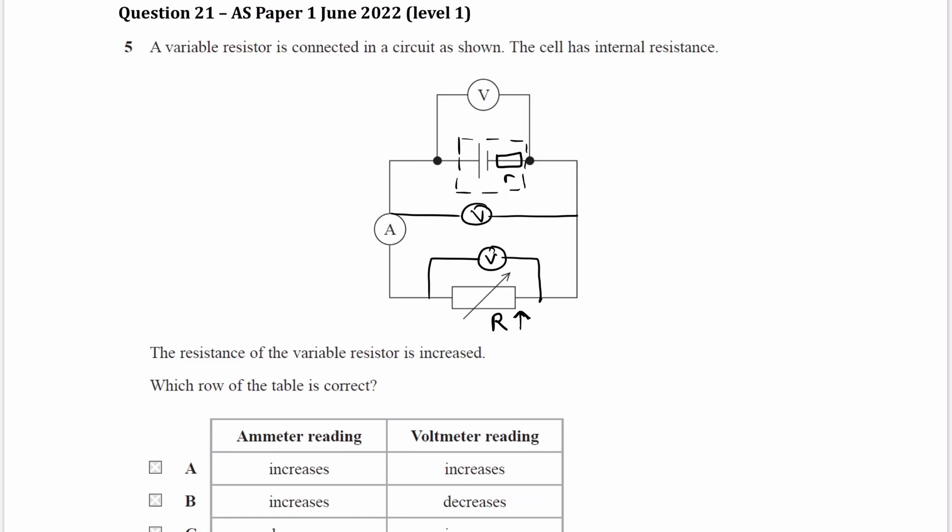So then, if we know that this resistance here is increasing, and it now gets a greater share of the voltage, then the voltmeter here will detect a greater voltage as well. The terminal voltage will go up. So we know that that's going to increase.